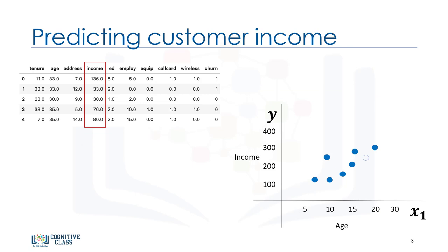Forget about the churn prediction for a minute and assume our goal is to predict the income of customers in the dataset. This means that instead of predicting churn, which is a categorical value, let's predict income, which is a continuous value. We can select an independent variable such as customer age and predict a dependent variable such as income. For simplicity, let's just take one feature here.